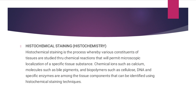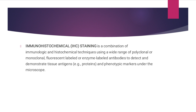For histochemical staining, various constituents of tissues are studied through chemical reactions that permit microscopic localization of a specific tissue substance. Chemical ions such as calcium, molecules such as bile pigments, and biopolymers such as cellulose, DNA, and specific enzymes are among the tissue components that can be identified using histochemical staining techniques. For immunohistochemical or IHC staining, a combination of immunologic and histochemical techniques uses a wide range of polyclonal or monoclonal fluorescent-labeled or enzyme-labeled antibodies to detect and demonstrate the tissue's antigens, such as proteins and phenotypic markers, under the microscope.